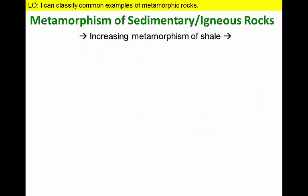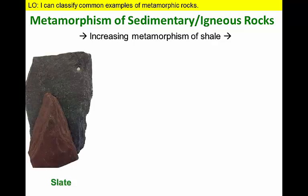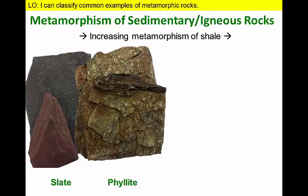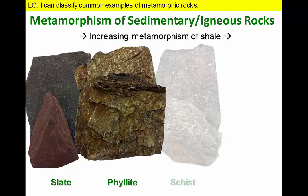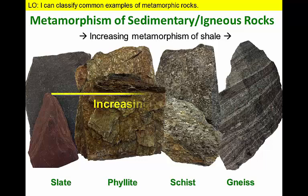As the degree of metamorphism increases with rising temperature and pressure, a typical rock will progress through a series of stages from low-grade to high-grade metamorphism. For example, if we metamorphosed the common sedimentary rock shale, it would first be transformed to slate, then to phyllite, to schist, and finally to gneiss.